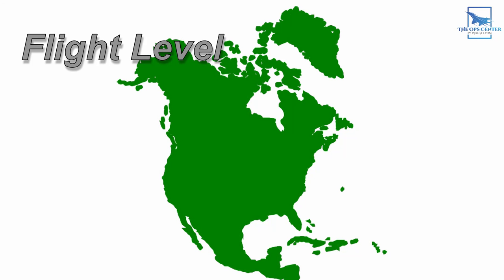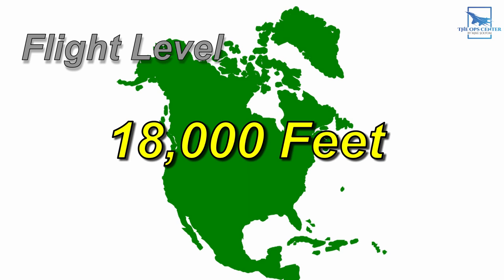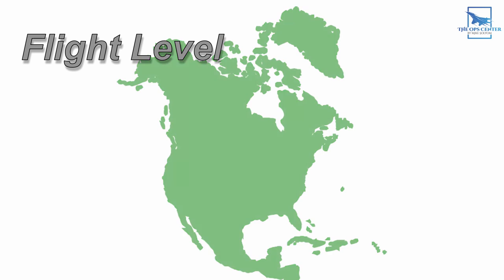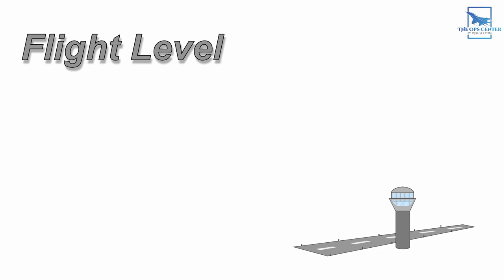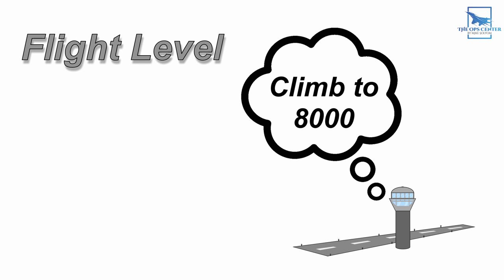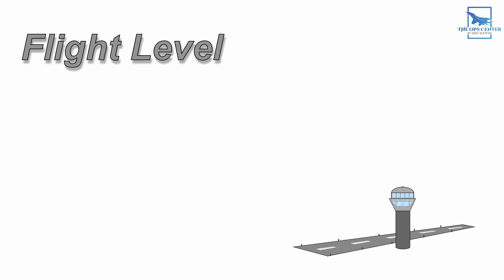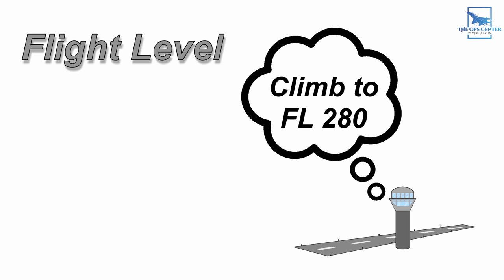So when do we use flight level instead of feet? This depends on where you are in the world, but in the U.S. and Canada, pilots switch to flight levels at 18,000 feet. This altitude is known as the transition altitude, and it varies by region based on local rules. So below the transition altitude, a pilot might hear a radio call to climb to 8,000, but above that altitude, that radio call might sound like flight level 280.